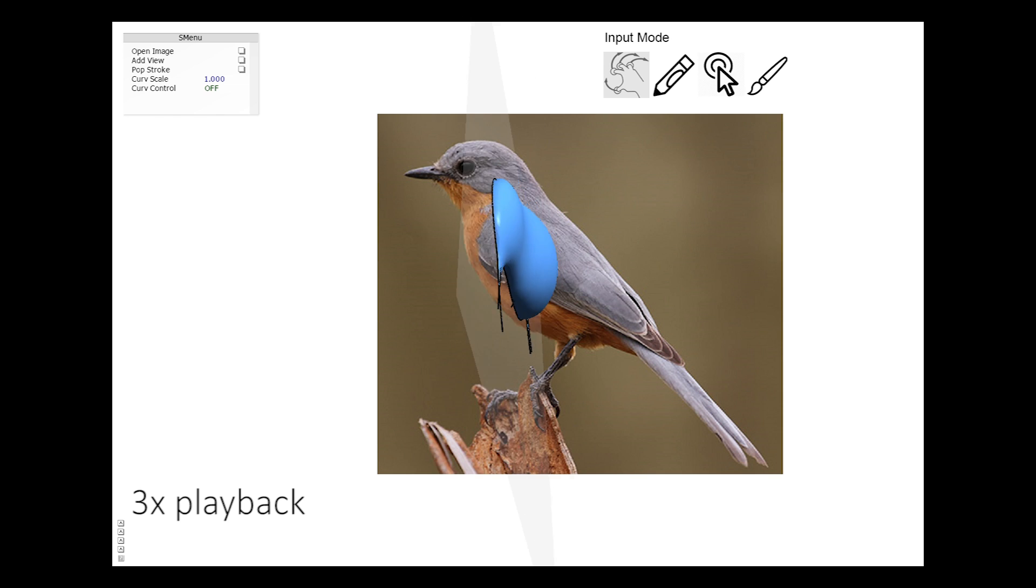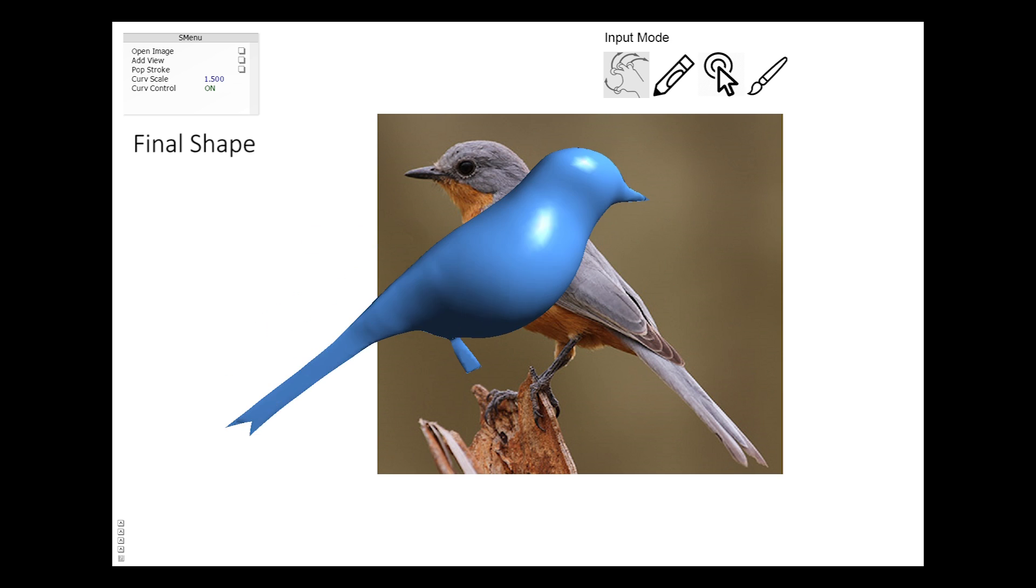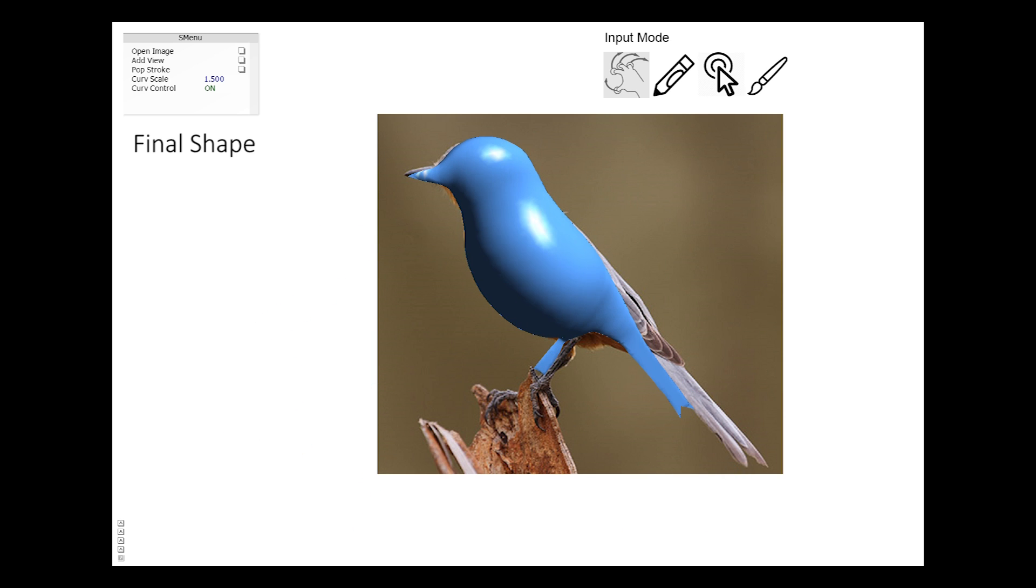After checking the surfacing result, we can adjust the curvature scale parameter to tune the shape. We use symmetry to build the backside and complete this simple model.